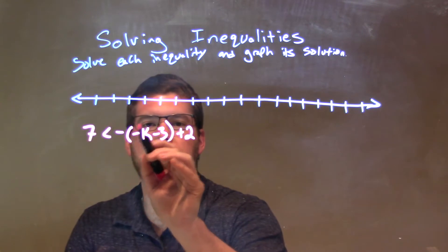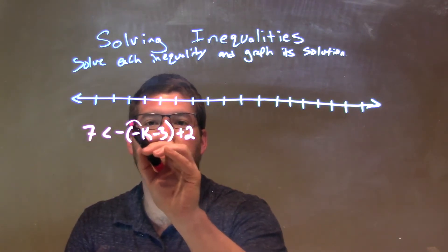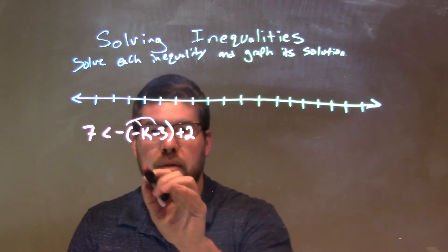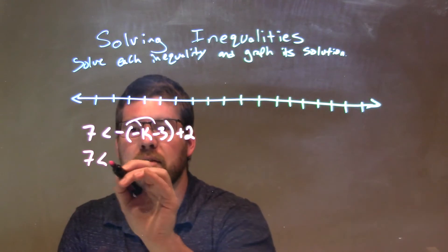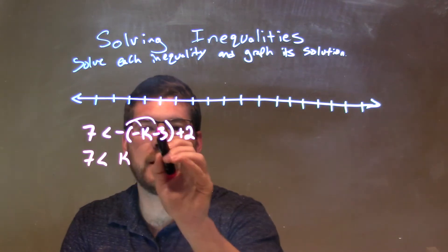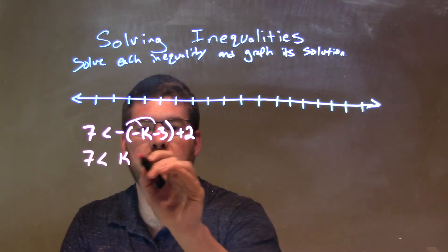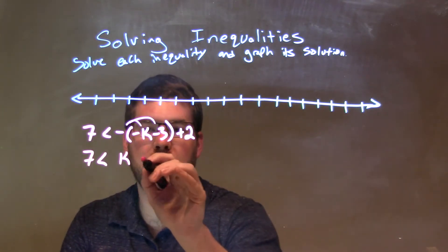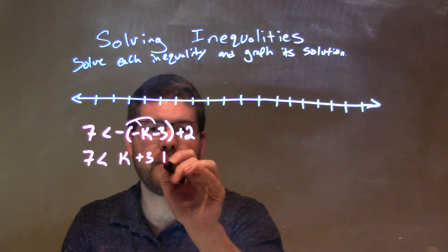First thing I'm going to do is distribute that negative across to both parts within the parentheses. So 7 is less than... negative times a negative is a positive k, then negative times negative 3 is positive 3, so positive k plus 3, and then we have the plus 2.